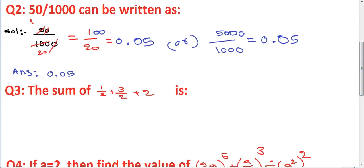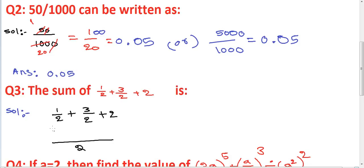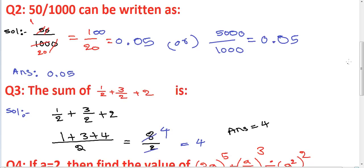Third question: the sum of 1 by 2 plus 3 by 2 plus 2 is. Solution — given 1 by 2 plus 3 by 2 plus 2. LCM of 2 and 2 is 2. That gives 1 plus 3 plus 4, equals 8 by 2, which equals 4. The answer is 4.